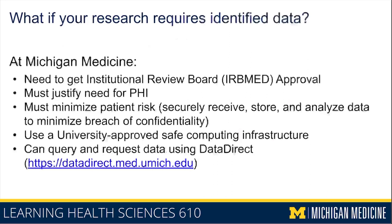Every place with access to health data will have its own process, generally similar to what's outlined for Michigan Medicine. The key takeaways are: primary and secondary use of data have very different problems in analysis; secondary use is more common for retrospective analysis but data may have been collected for a different reason than you want to use it. There are laws protecting patient information, but there are ethical ways to use that data for research, typically through submission and approval of an IRB application.